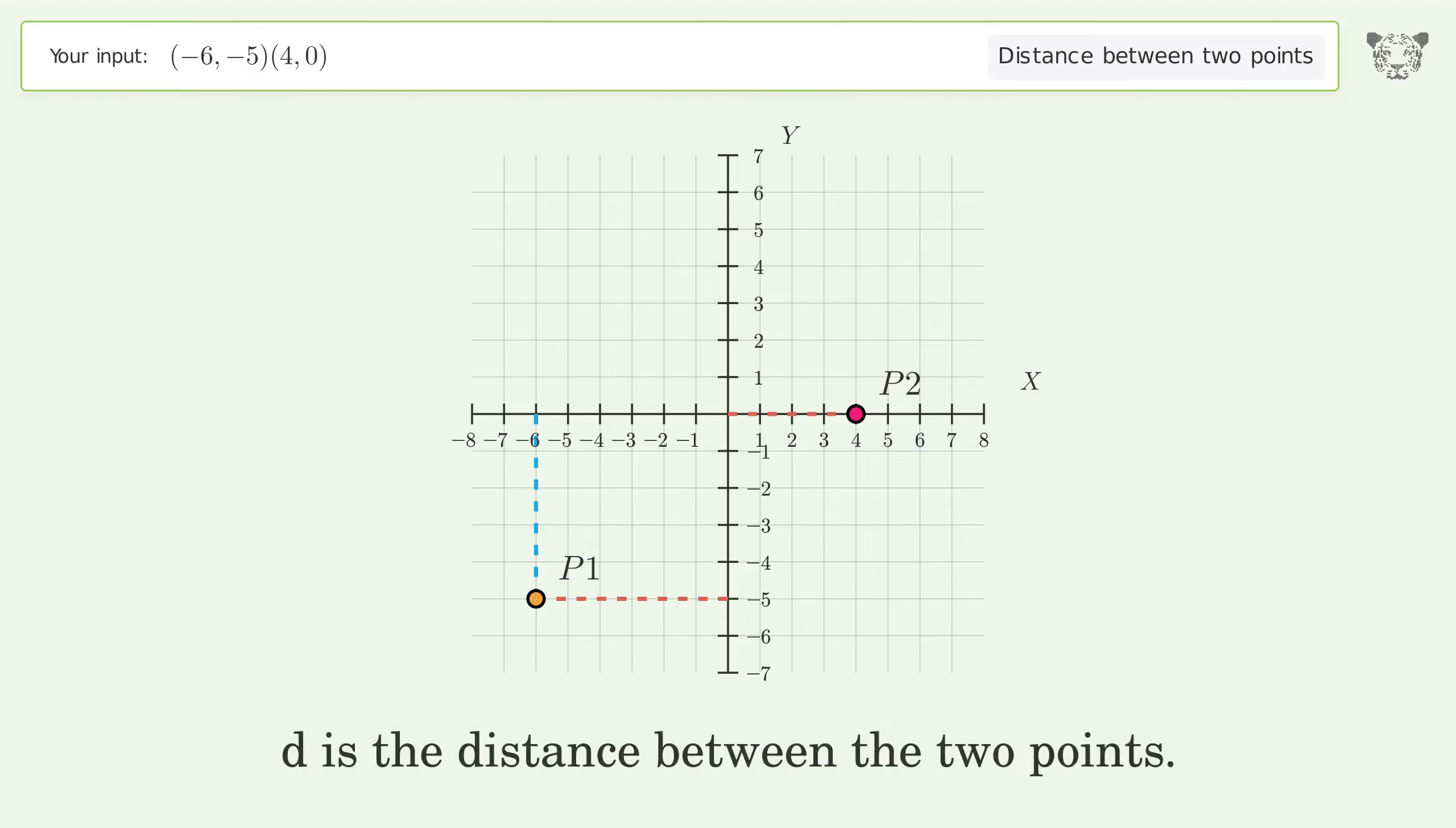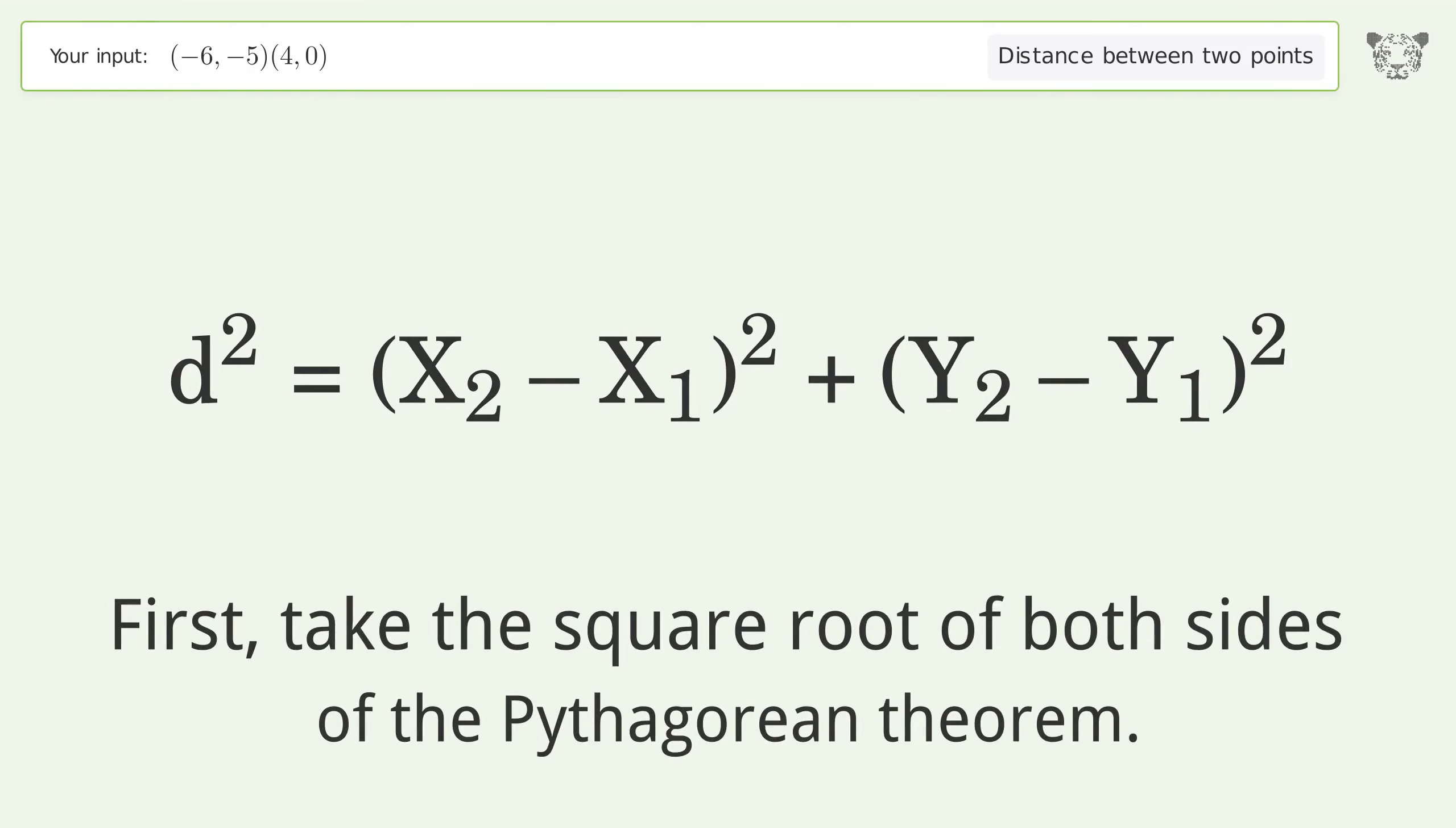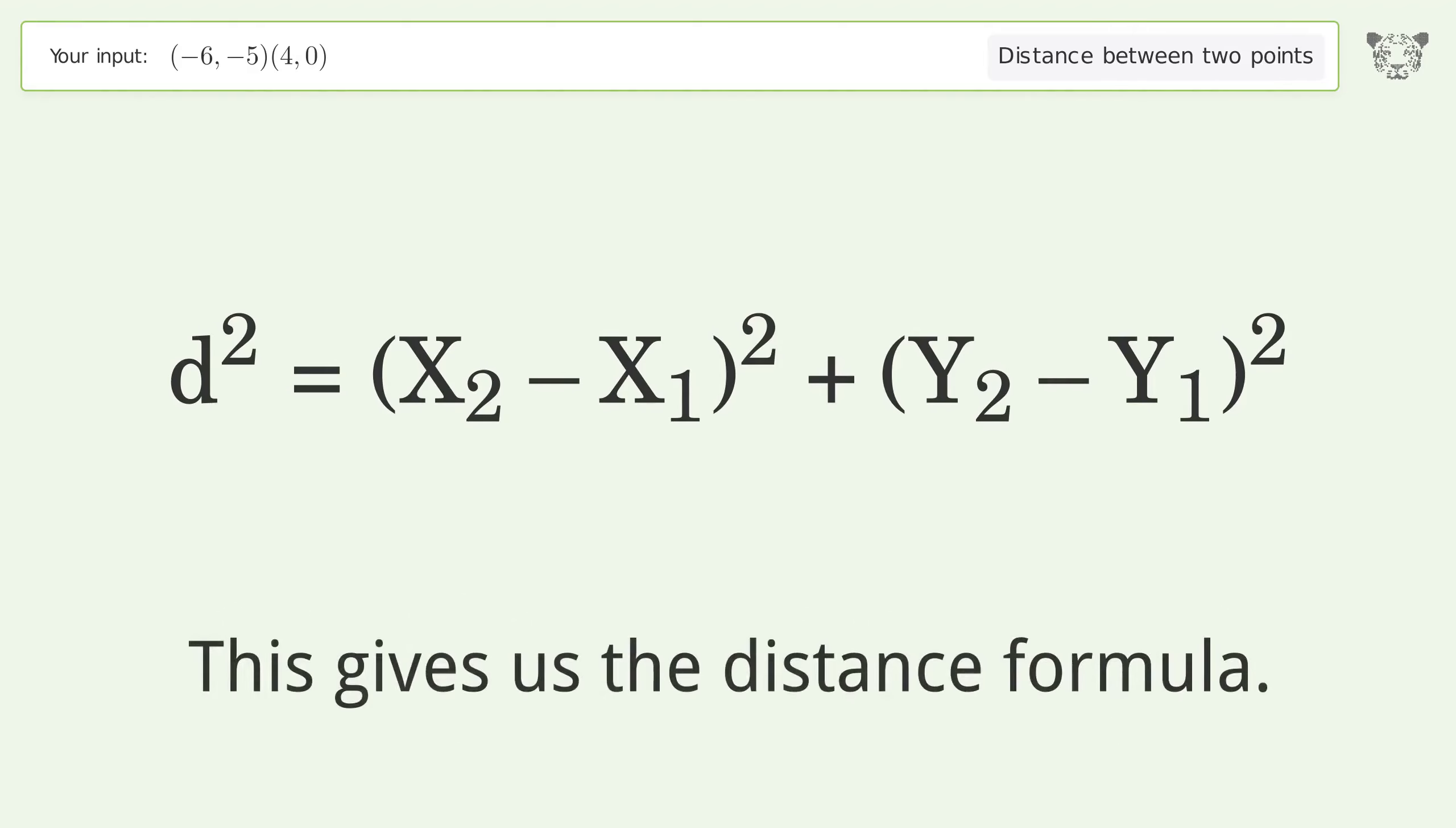d is the distance between the two points. First, take the square root of both sides of the Pythagorean theorem. This gives us the distance formula.